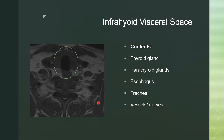In the infrahyoid visceral space, you are between the carotid sheaths. You have the trachea, the thyroid gland, the parathyroid glands, the esophagus, and that tracheoesophageal groove where small lymph nodes like to live. You have vessels and nerves including the phrenic nerve and the recurrent laryngeal nerve running through there. If you have a mass in the infrahyoid visceral space, look at all of the contents and see what the lesion appears to be related to. Remember, everything medial to these above the hyoid would be a pharyngeal space, which we discussed in the anatomy of the head and neck. Thank you for your attention.